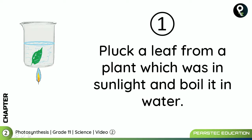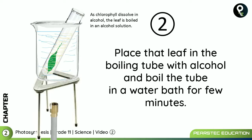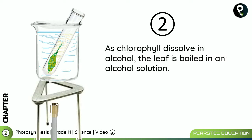There are only four steps in testing a leaf for starch. Step one: pluck a leaf from a plant which was in sunlight and boil it in water. Step two: place that leaf in a boiling tube with alcohol and boil the tube in a water bath — without the flame, since the water is already boiling.